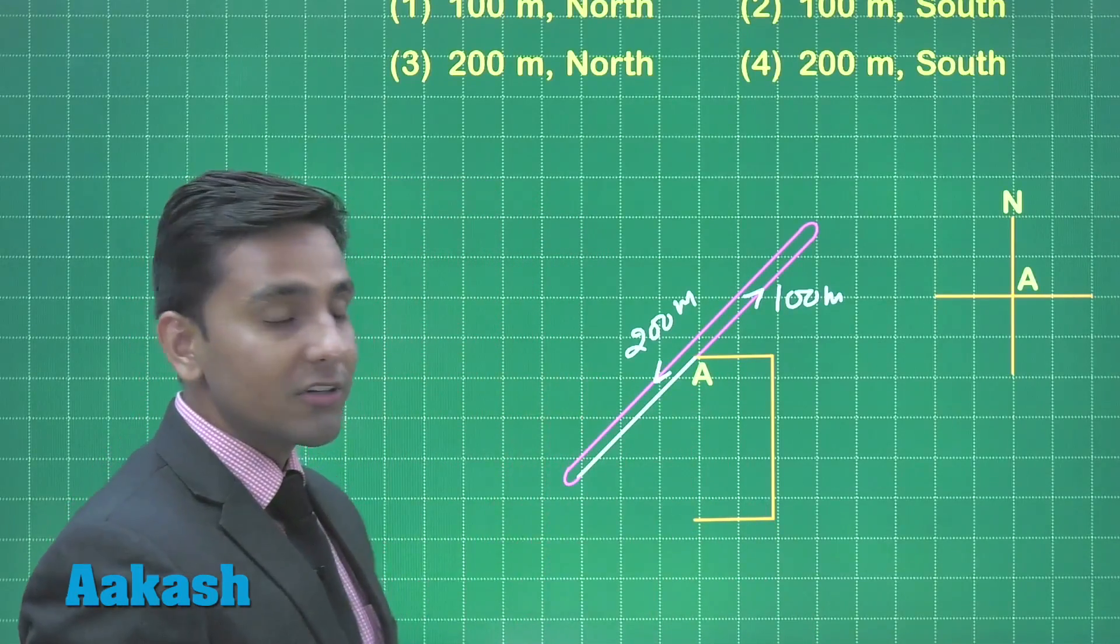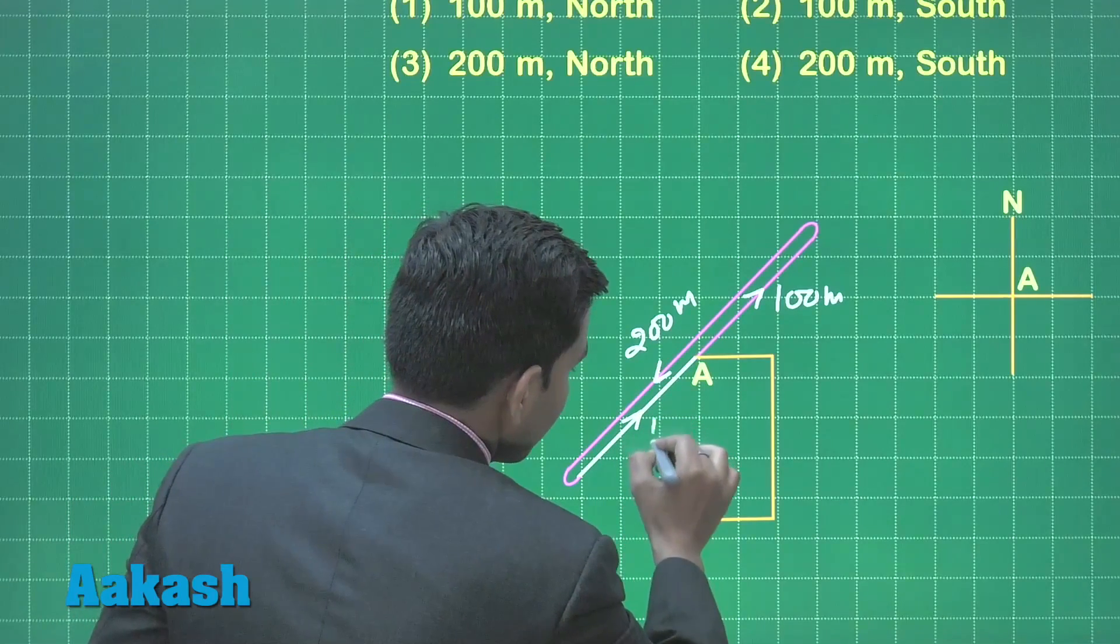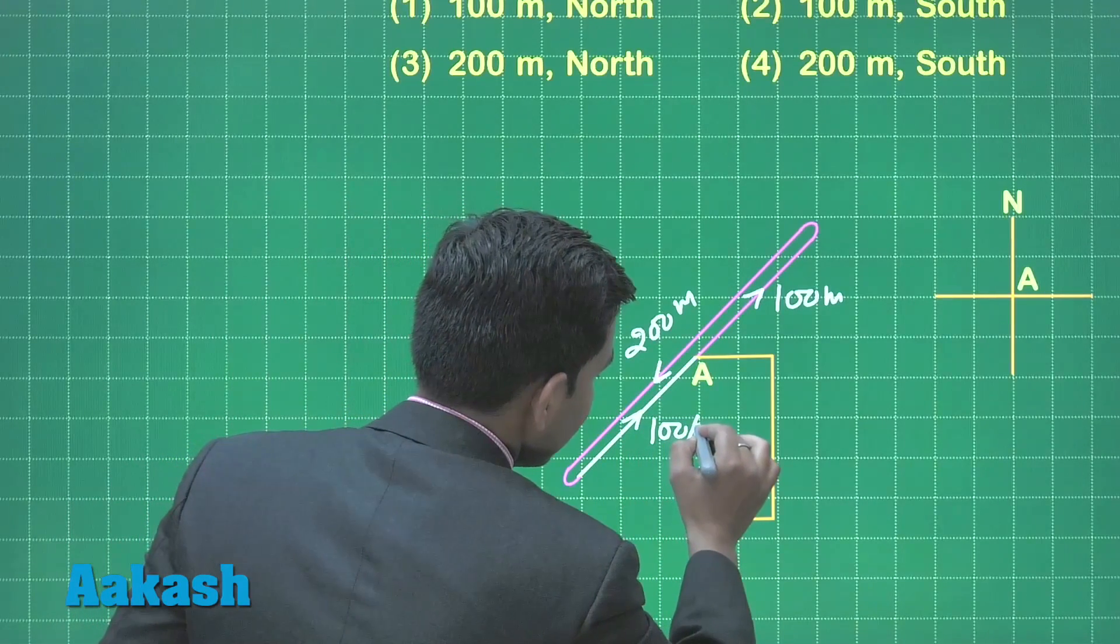Again 100 meter in northeast direction, that means he will reach at the initial position from where he started his journey.